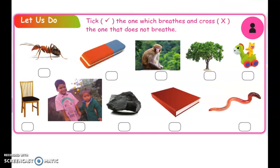Tick the one which breathes and cross the one which does not breathe. Ant — breathes. Eraser — does not breathe. Monkey — breathes. Plant — breathes. Toy — does not breathe. Chair — does not breathe. Children — breathe.